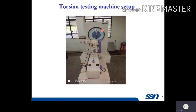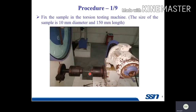Here we have a dial where you can take the reading of torque applied. This is a motor, so torque can be applied using the motor as well as manually — both facilities are available. The specimen is fixed between the two jaws. Here you can find the theta one value, which is the angular twist of one end of the rod. From this dial, you take theta two. The difference between these two gives you theta, the angular twist of the rod between the two points.